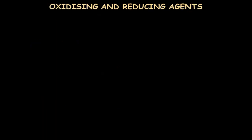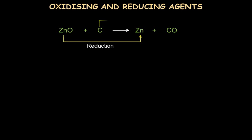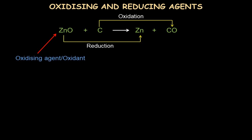Now let's understand oxidizing and reducing agents using the zinc oxide and carbon example. Zinc oxide is getting reduced to zinc, but it is giving its oxygen to carbon to oxidize it. So zinc oxide is an oxidizing agent (or oxidant) because it is oxidizing carbon to carbon monoxide. Carbon is gaining oxygen and getting oxidized, but it is taking oxygen away from zinc oxide, helping it get reduced — so carbon is called a reducing agent (or reductant).